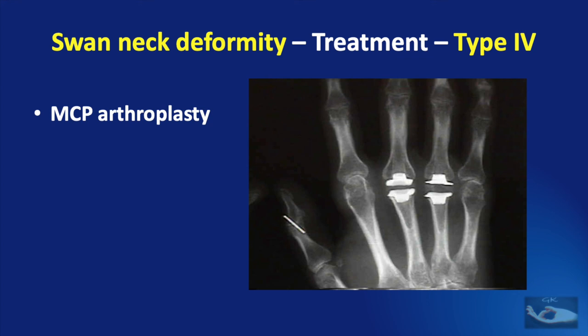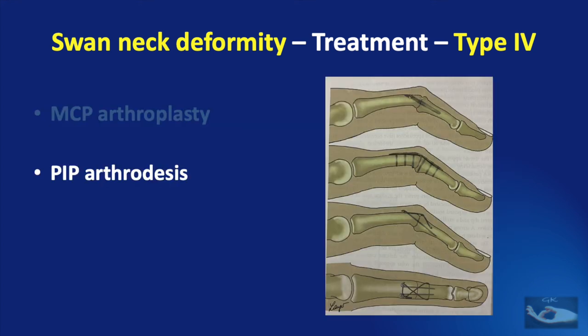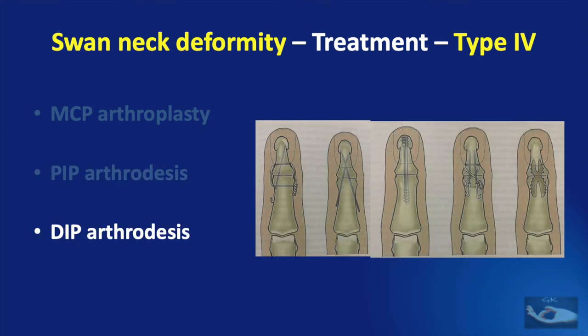In Type 4 involvement the joints are destroyed; however it is not ideal to do an arthrodesis of the metacarpophalangeal joint as the movements are very important, hence a metacarpophalangeal joint arthroplasty is ideal. As far as the proximal interphalangeal joint and distal interphalangeal joint are concerned, arthrodesis is ideal and can be done by different techniques. Please click on the shown links to see more about other zones of extensor tendon injury and their management, and do not forget to subscribe.